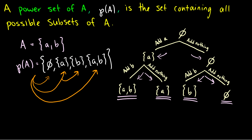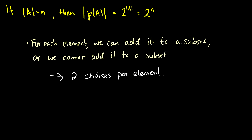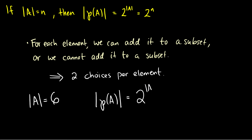Consider some examples. If A has no elements, we get 2^0 = 1 possible subset — just the empty set. If A has just one element, we ask: add it or not? That gives 2^1 = 2 possible subsets. With two elements, we get 2^2 = 4 possible subsets, as we saw. So if A has six elements, the cardinality of the power set of A is 2^6 = 64 possible subsets.